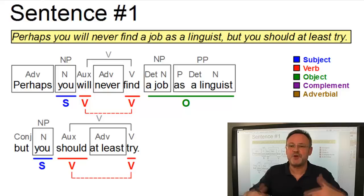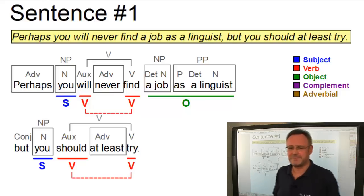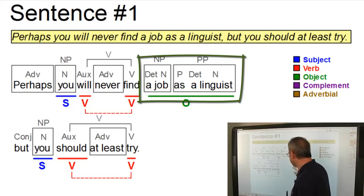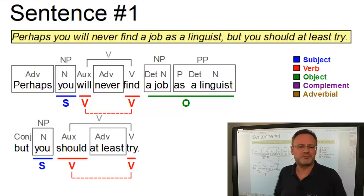Or does it modify job? That is, do you find a job of the type linguist? Well, it depends. But I chose the second option and the test is simple. The whole phrase can become the subject of a corresponding passive sentence. A job as a linguist, one unit, will never be found by you.